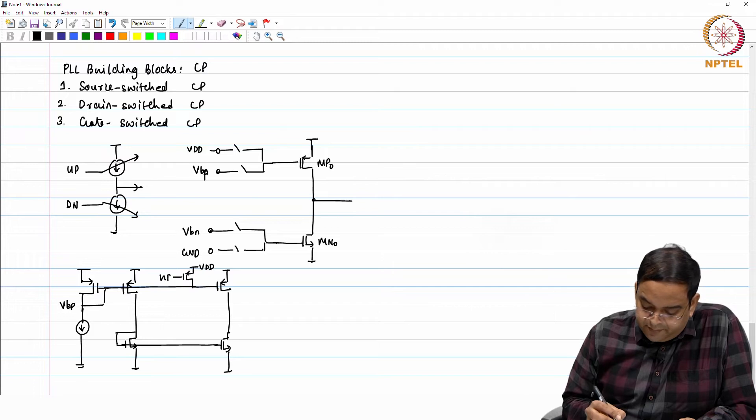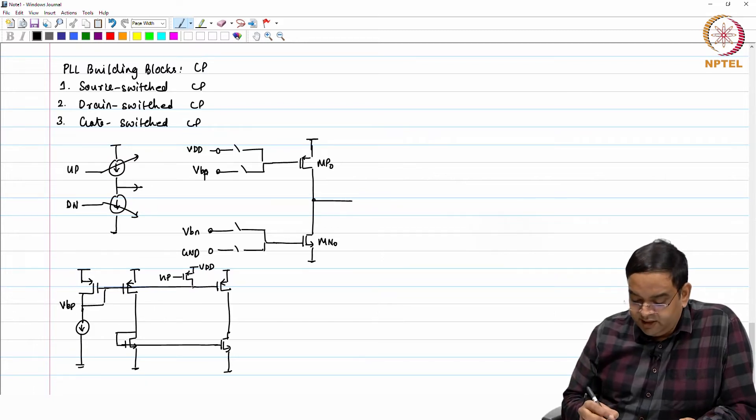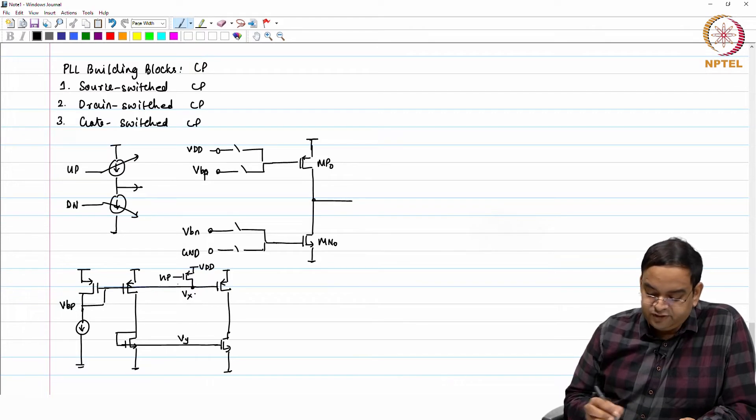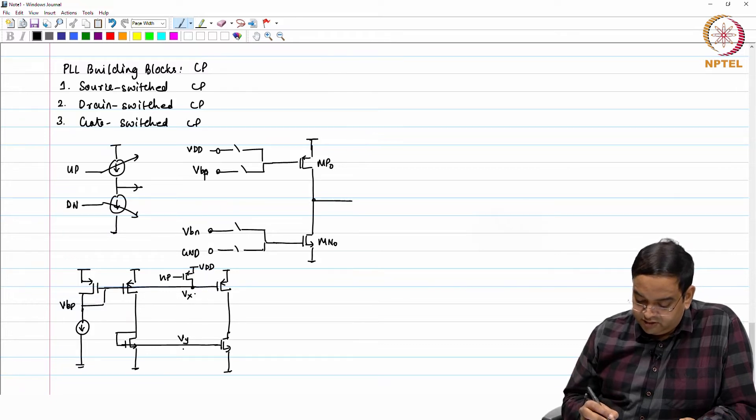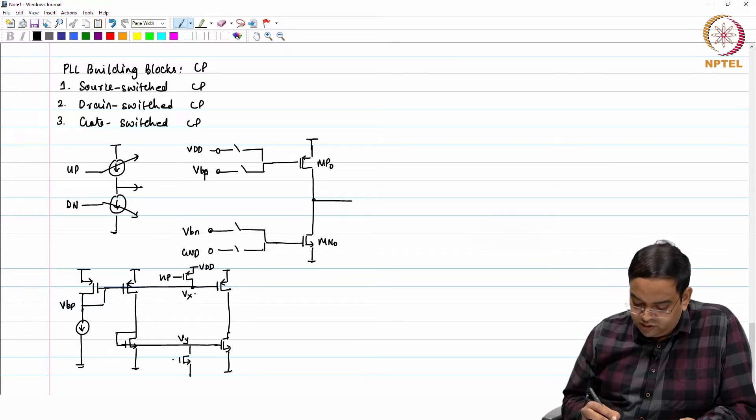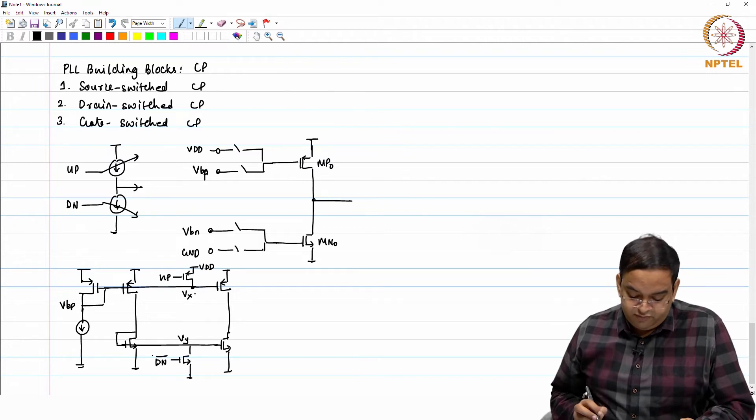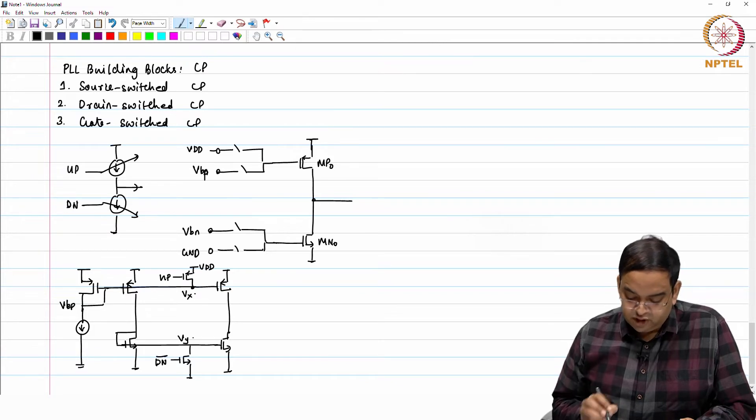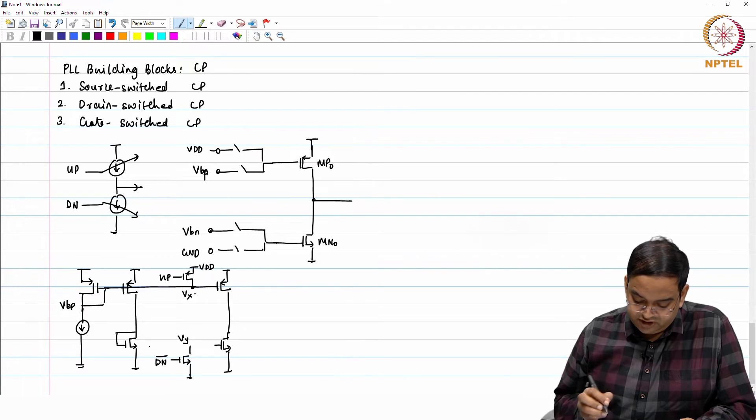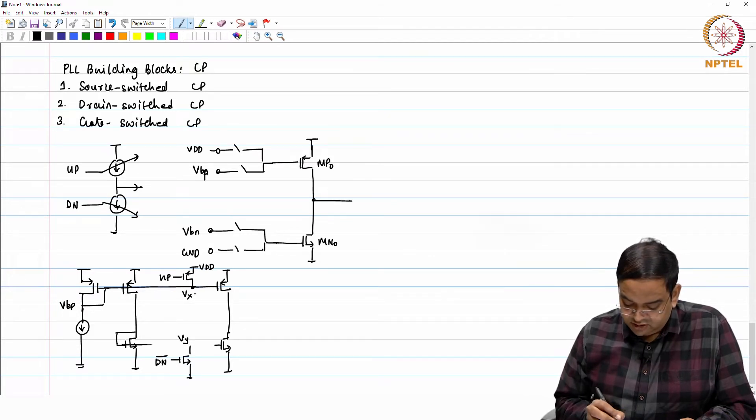Similarly, you connect this to NMOS and at these nodes, you can have a PMOS switch which pulls this node to VDD. This is with up. When up is high at that time, if I call this node as Vx and this as Vy, you have Vx node equal to VBP or whatever the bias voltage which is required here and in the other case, you will have this particular node generated to VBN. This is down bar.